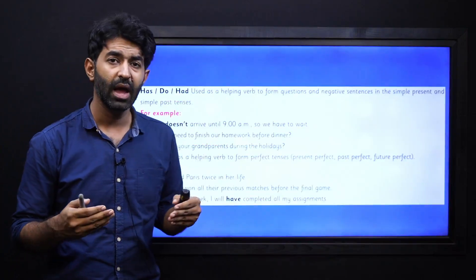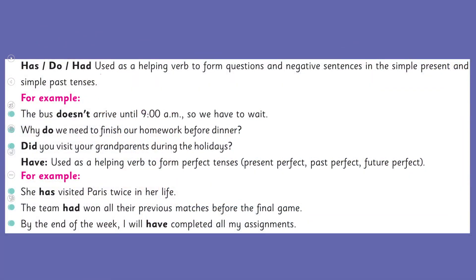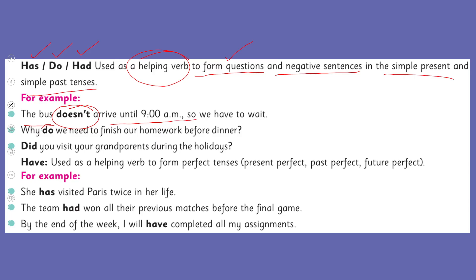Have, do, or had are used as helping verbs to form questions and also to form negative sentences — including words like 'not' — in the simple present and simple past tense. For example, 'The bus doesn't arrive until 9 a.m., so we have to wait.' 'Why do we need to finish our homework before dinner?' — this is a question, so we use 'do' as the helping verb while 'finish' is the main verb. 'Did you visit your grandparents during the holidays?' — 'visiting' is the main verb and 'did' is the helping verb in the past form.